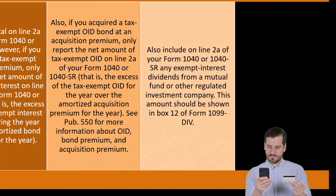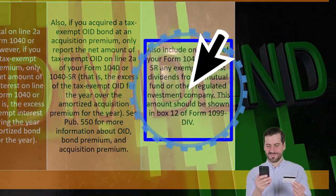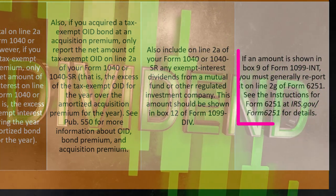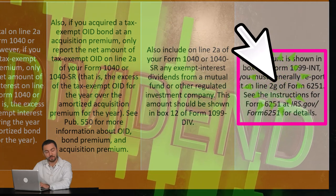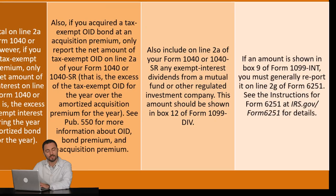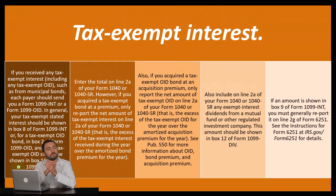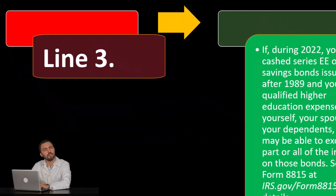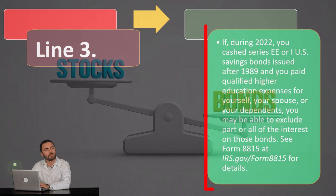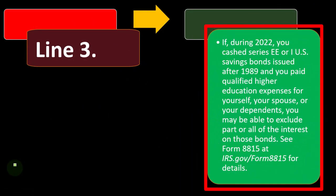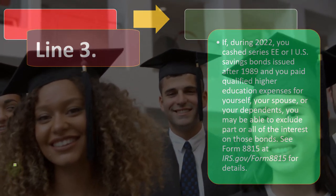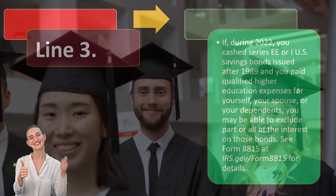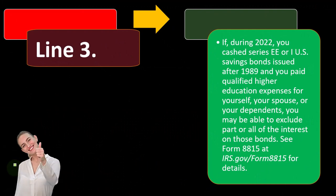Also include on line 2a of Form 1040 or 1040-SR any exempt-interest dividends from a mutual fund or other regulated investment company; this amount should be shown in box 12 of Form 1099-DIV. If an amount is shown in box nine of Form 1099-INT, you must generally report it on line 2g of Form 6251 — see the instructions for Form 6251 if applicable. Finally, if during 2022 you cashed Series EE or I savings bonds issued after 1989 and paid qualified higher education expenses for yourself, your spouse, or dependents, you may be able to exclude part or all of the interest. See Form 8815 for more details.